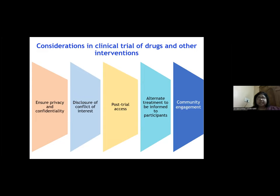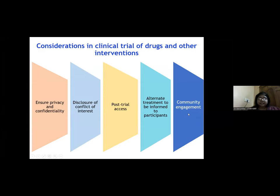Post-trial access is very important in drug or vaccine trials. It is not sufficient for the community from which participants were drawn to receive nothing after the study's completion. The drug must be made available at a reasonable price, or the vaccine must be available for the community. This applies to trial participants as well — for example, in a cancer trial, if the drug is proven safe, how long it will be given to the participant must be considered, and alternate therapies must be communicated.